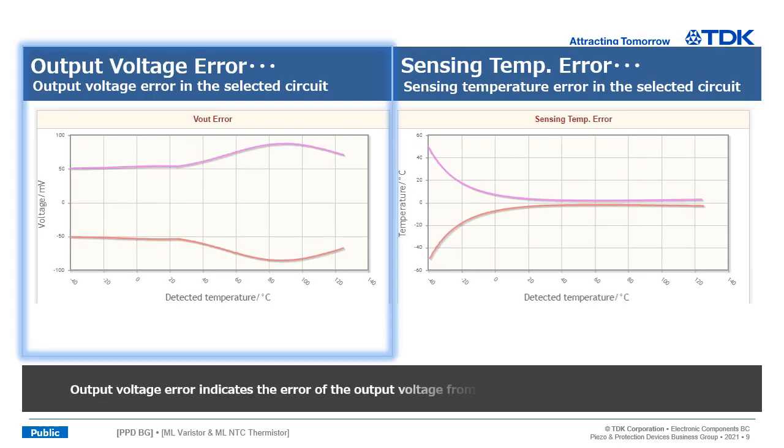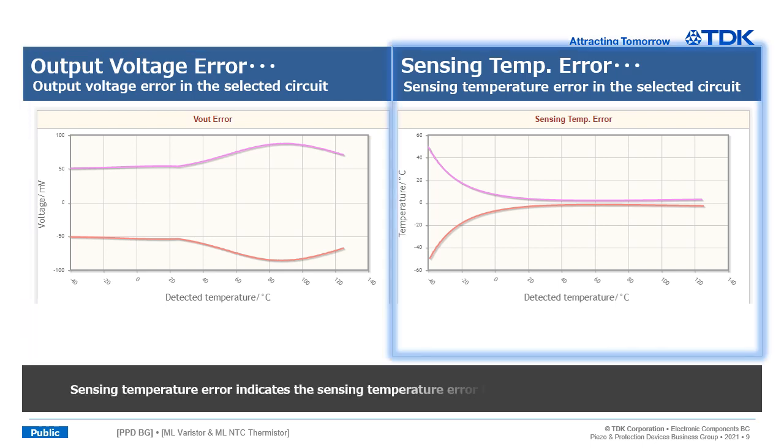Output voltage error indicates the error of the output voltage from resistance tolerance of NTC and resistor. Sensing temperature error indicates the sensing temperature error by each temperature.